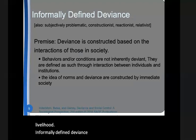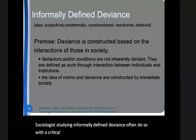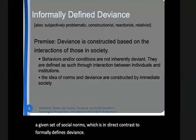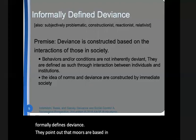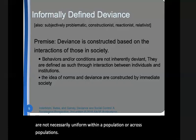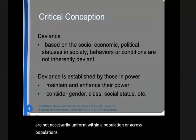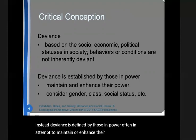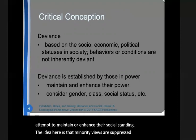Informally defined deviance can also include folkways and mores. Sociologists studying informally defined deviance often do so with a critical lens. They argue against the idea that there are a given set of social norms, which is in direct contrast to formally defined deviance. They point out that mores are based in moral values, which are not necessarily uniform within a population or across populations. Critical conceptions of deviance argue that deviance is status and context-based. They reject that any behavior or context is inherently bad, negative, or immoral. Instead, deviance is defined by those in power, often in an attempt to maintain or enhance their social standing. The idea here is that minority views are suppressed by those in power by labeling those views deviant.